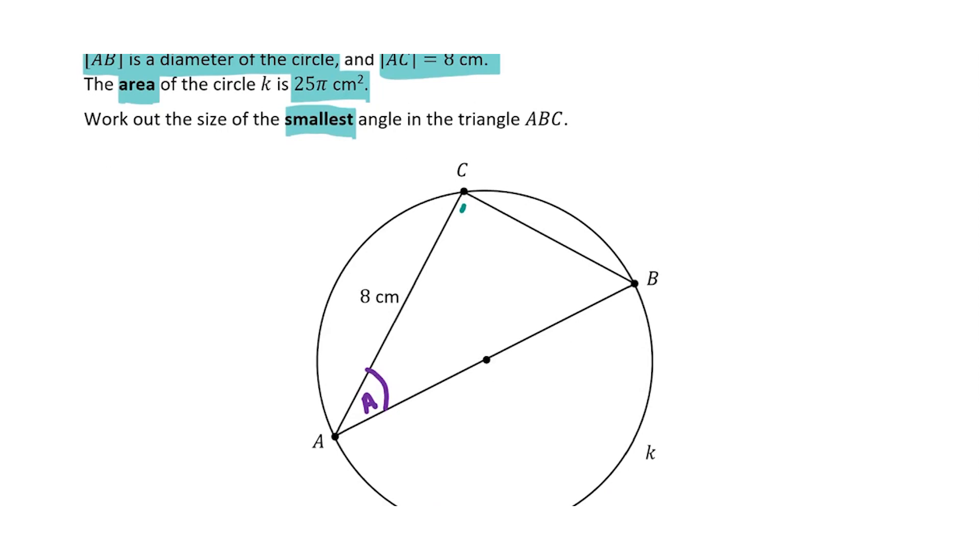We know that this has to be a right angle because we're told that AB is the diameter, and any triangle in a semicircle, when one side of it is the diameter, has to be a right angle triangle. This is something that you should remember. So if I work out the length AB and I have this here, I can use my trigonometric functions to work out A.